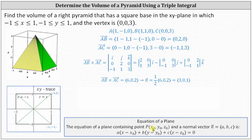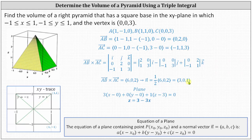The equation of the plane given the point (x₀, y₀, z₀) with normal vector (a, b, c) is given by the standard formula. Using normal vector n = (3, 0, 1) and point C = (0, 0, 3), the equation of the plane is 3(x − 0) + 0(y − 0) + 1(z − 3) = 0. Solving for z, we get z = 3 − 3x. This is the equation of the green face of the pyramid and is the upper limit of integration with respect to z.